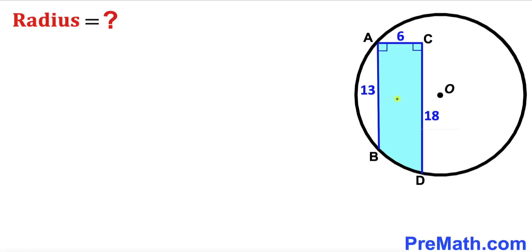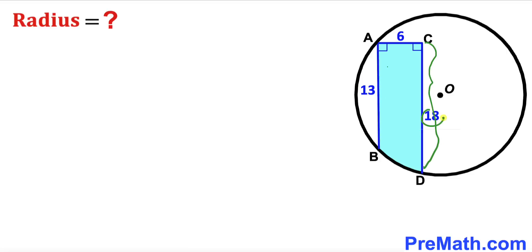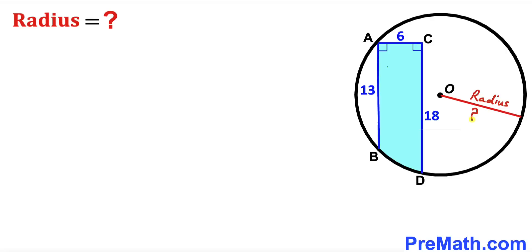Welcome to pre-math. In this video we have got a blue shaded region fully confined in a circle with center O, such that chord AB is 13 units, segment CD is 18 units, and segment AC is 6 units. Moreover, these marked angles are 90-degree angles, and our task is to calculate the radius of this circle.